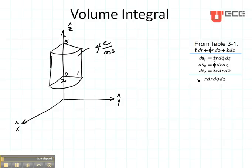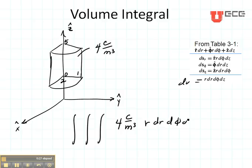Then what I would do is a triple integral where I would put my function, four coulombs per meter cubed, and then I would put my DV term which is R DR D phi D Z. And I would integrate this over the specific range.